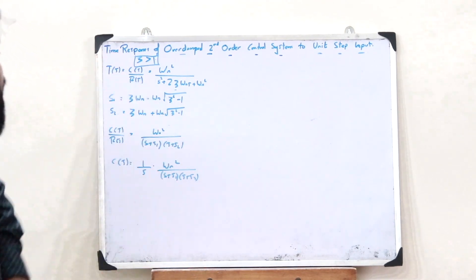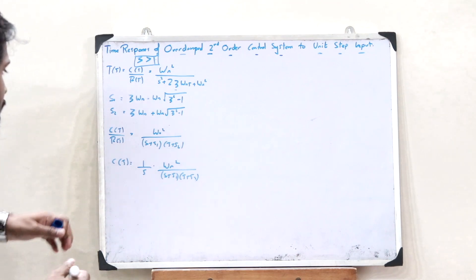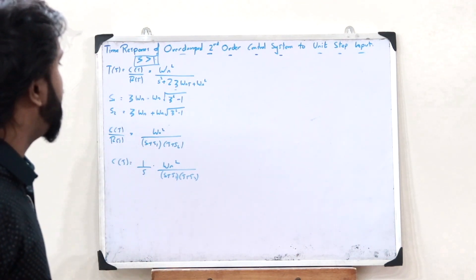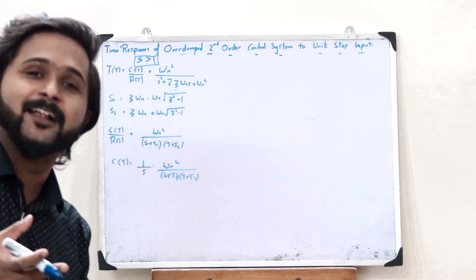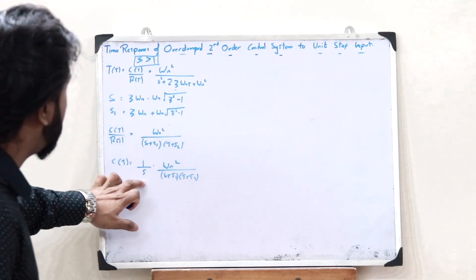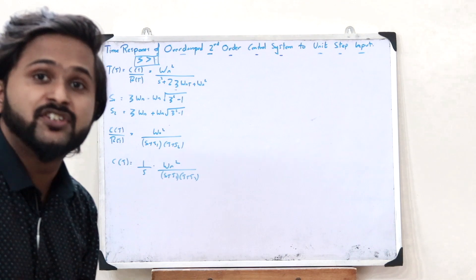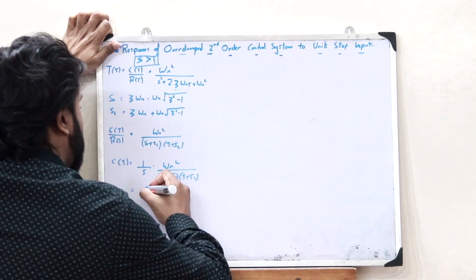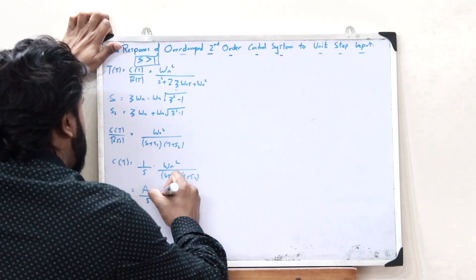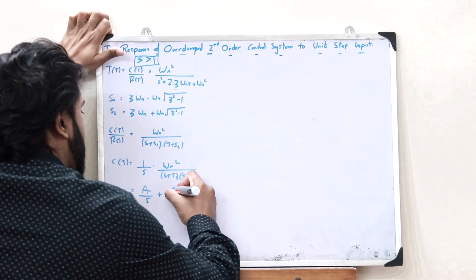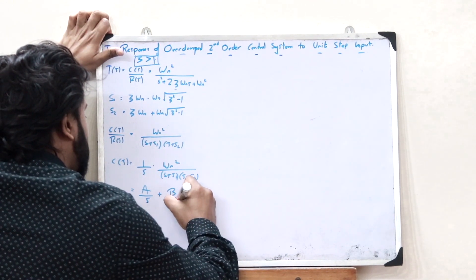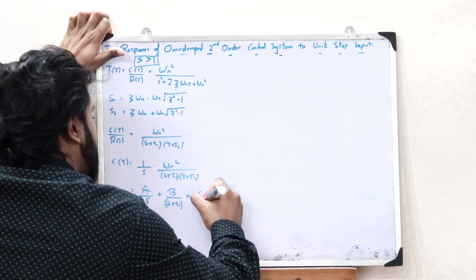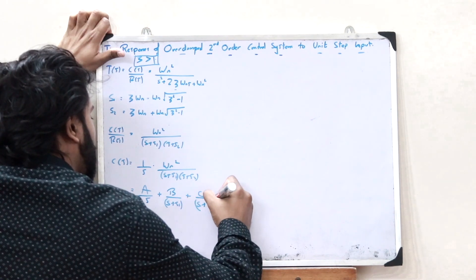In order to find the time response of this particular control system, all we have to do is find the inverse Laplace transform of C(S). To do so, we split this using partial fractions: C(S) = A/S + B/(S + S1) + C/(S + S2).